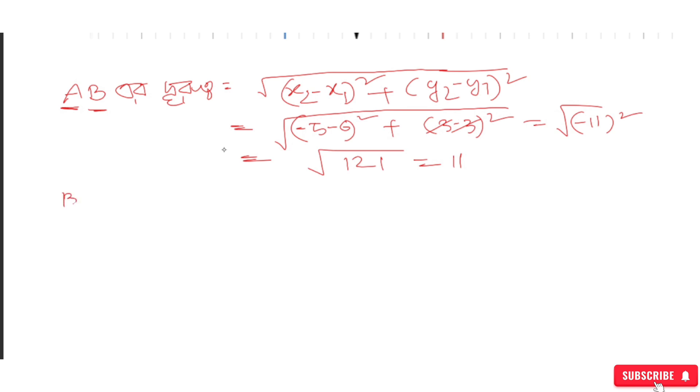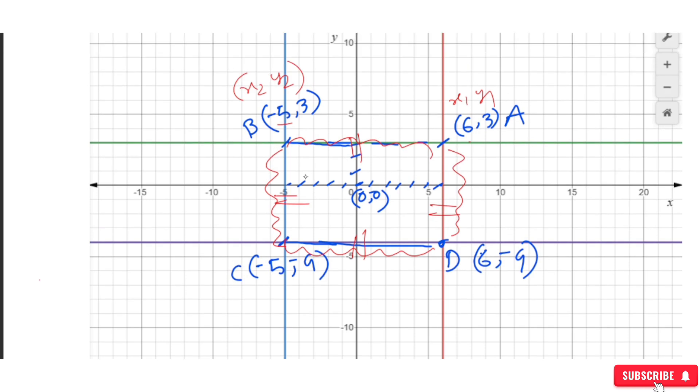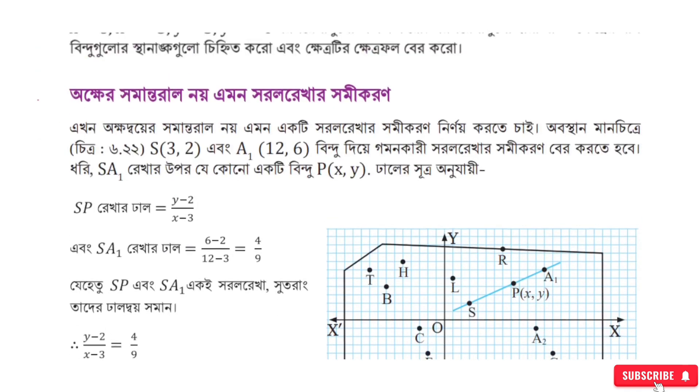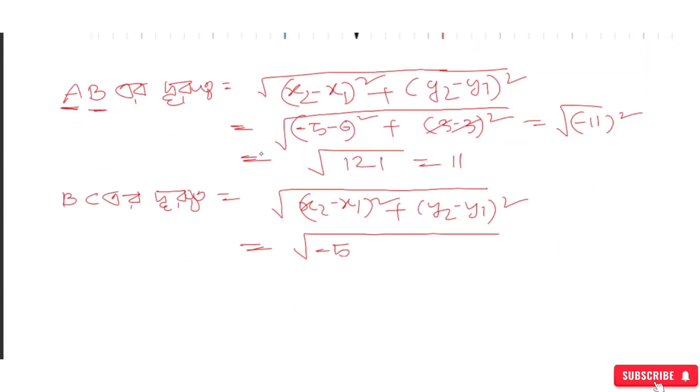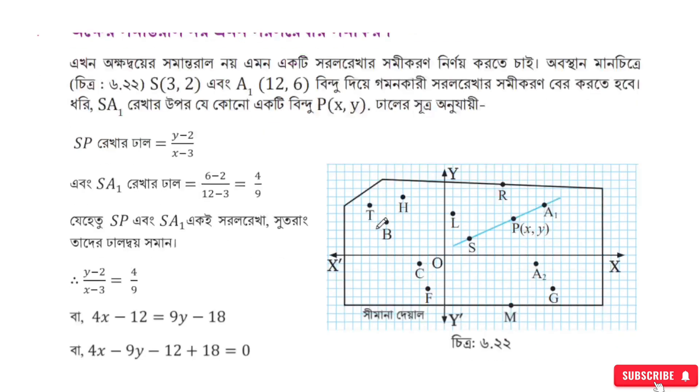For BC, again using the distance formula: square root of (x2 minus x1) whole square plus (y2 minus y1) whole square. Here x2 is minus 5 and x1 is minus 5, so we get minus 5 minus minus 5 which equals 0.